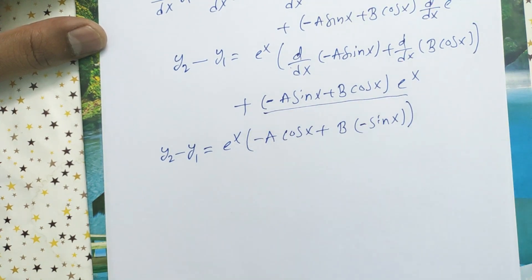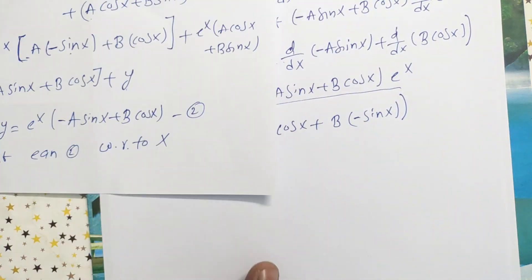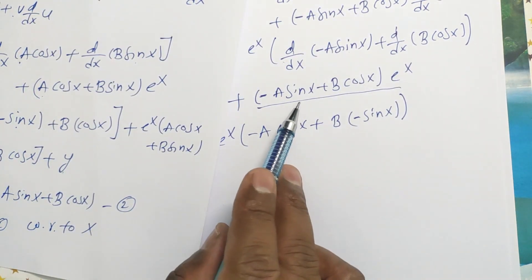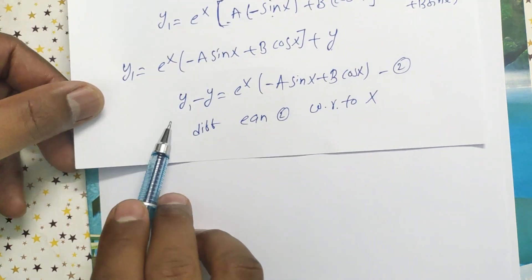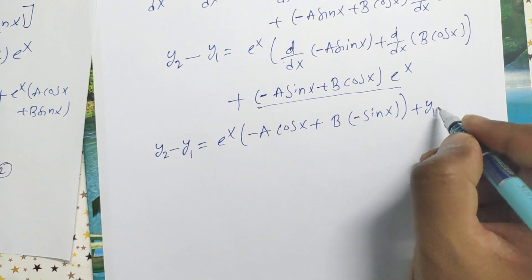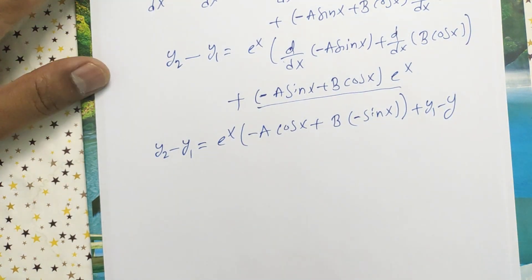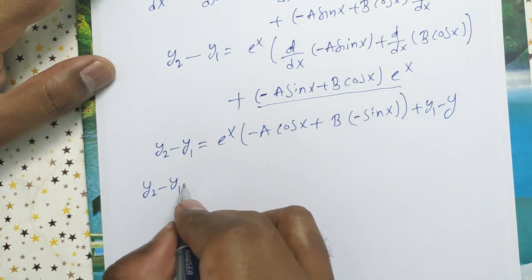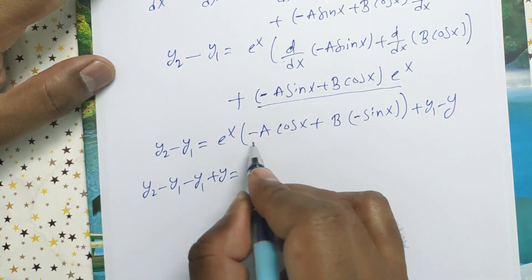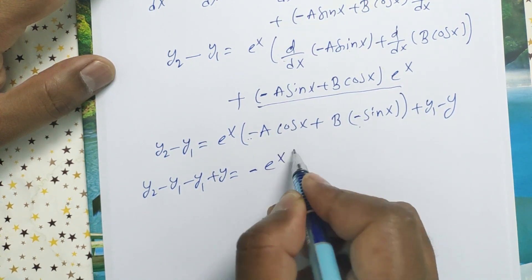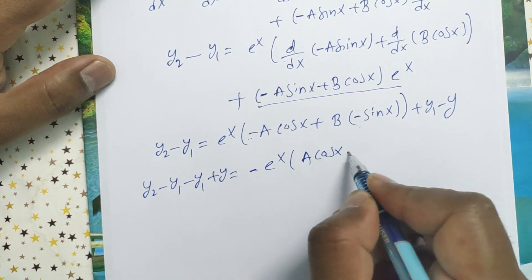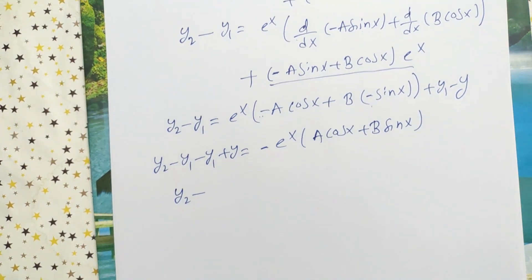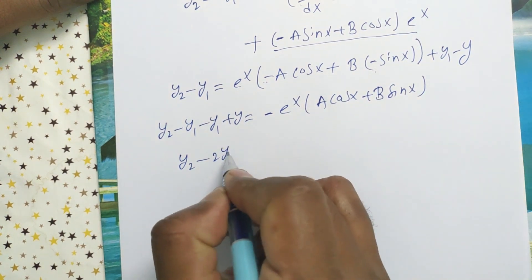From equation two, eˣ(-a sin x + b cos x) equals y₁ - y. Substituting this in and bringing y₁ and -y to the left side, we get y₂ - y₁ - y₁ = -eˣ(a cos x + b sin x), which simplifies to y₂ - 2y₁ + y = -eˣ(a cos x + b sin x).